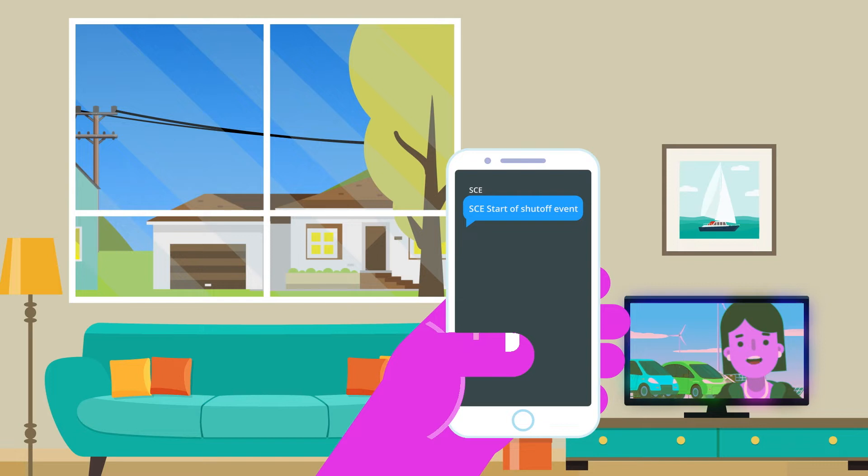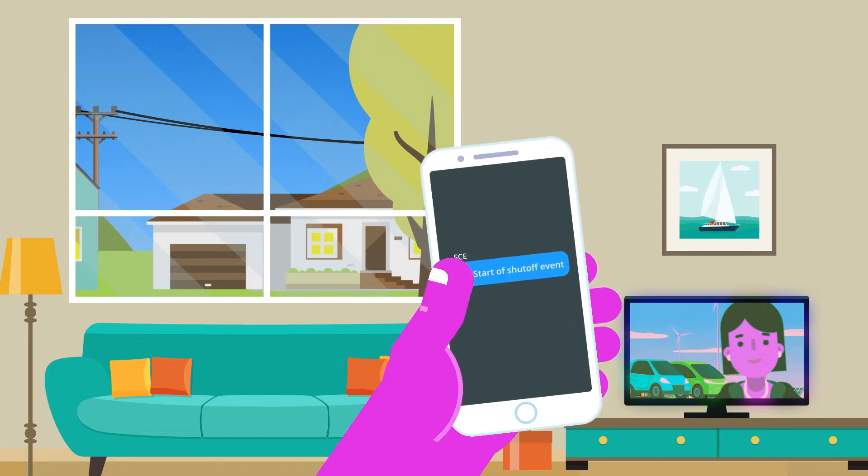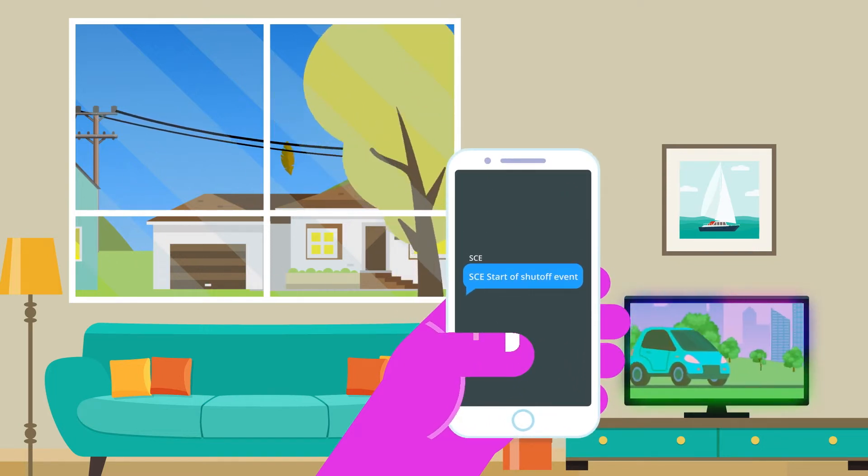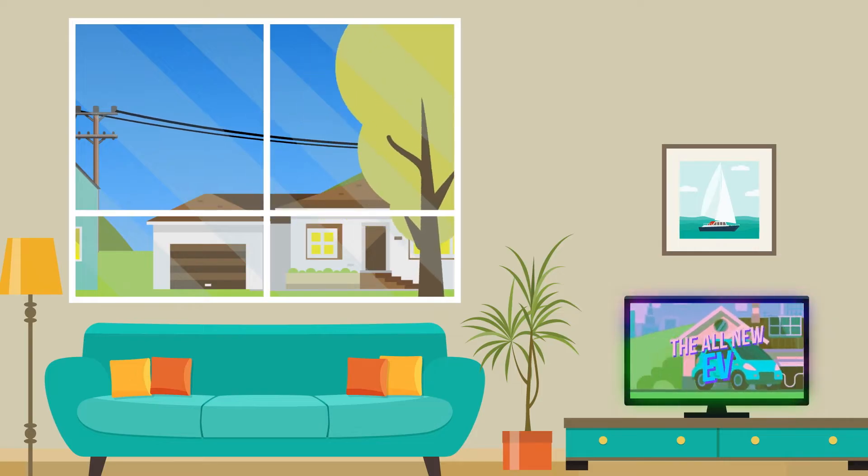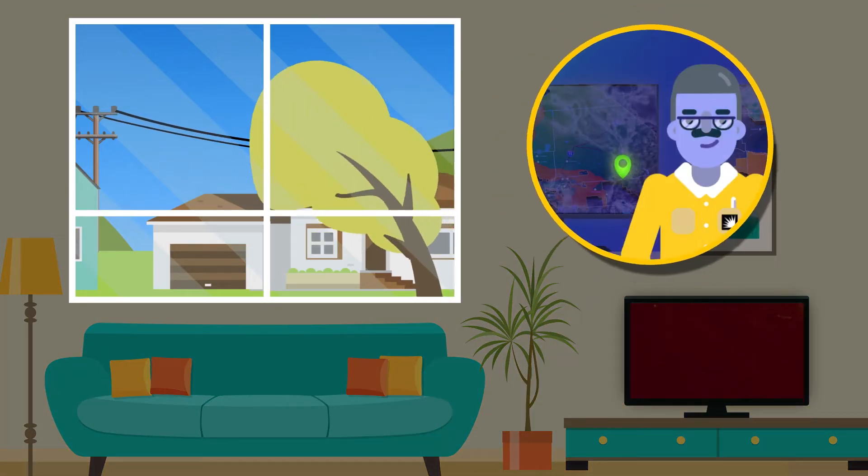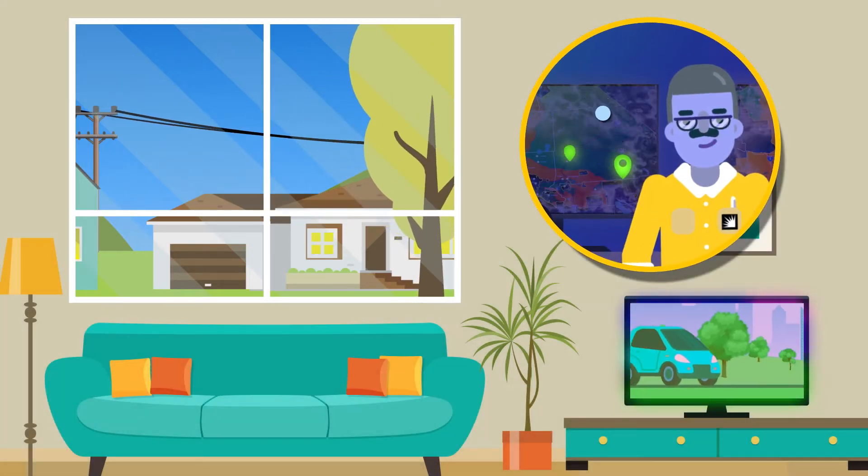We try to let customers know one to four hours in advance of when the wind will hit. In some cases, the wind comes up too quickly. And in other cases, taking close reads of the weather allows us to avoid shutting off power.